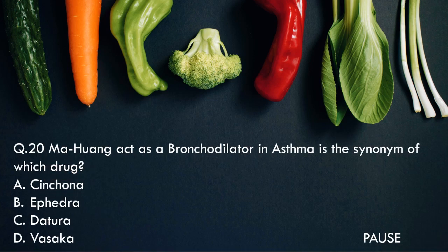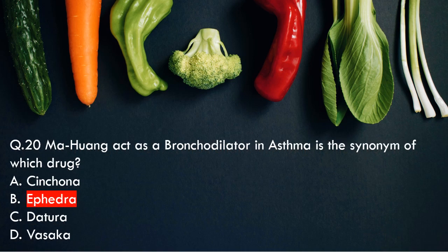Question 20: Mahuang, which acts as a bronchodilator in asthma, is the synonym of which drug? Option A, Cinchona. Option B, Ephedra. Option C, Stramonium. And option D, Vasaka. And the right answer is Ephedra. So Mahuang is the synonym of Ephedra, which is used as a bronchodilator in asthma.